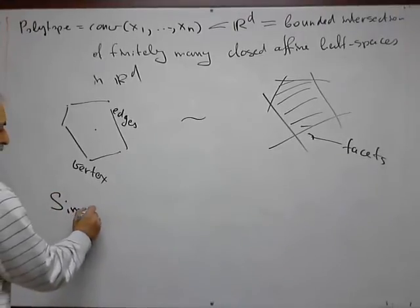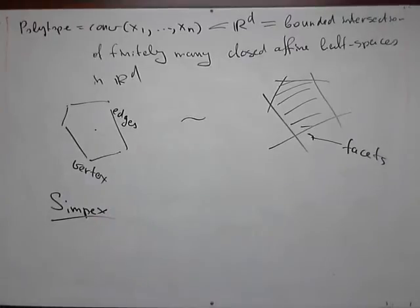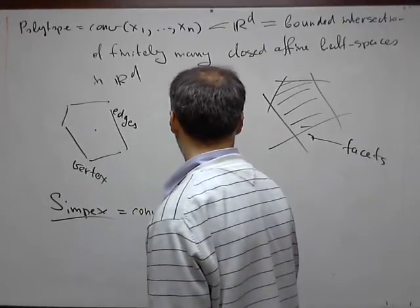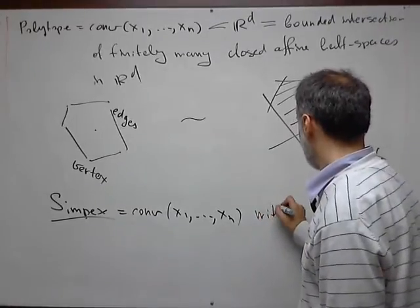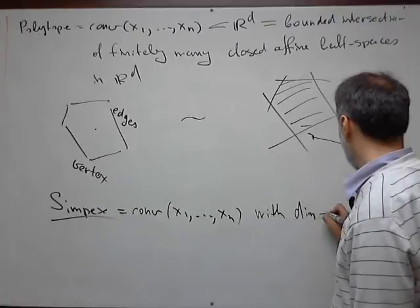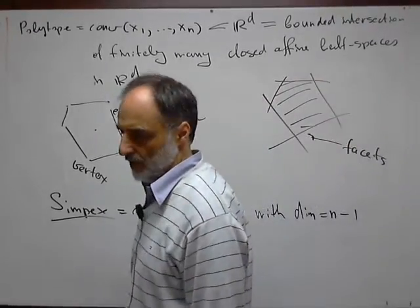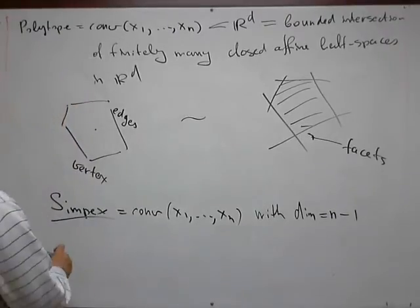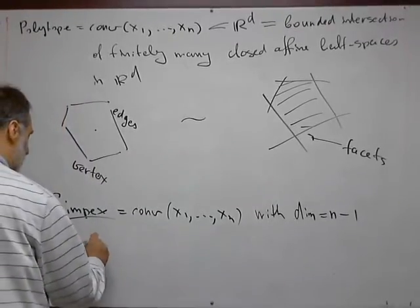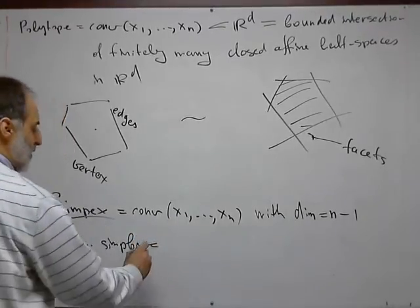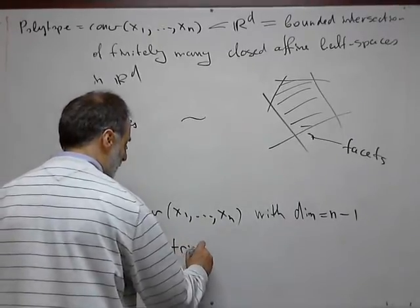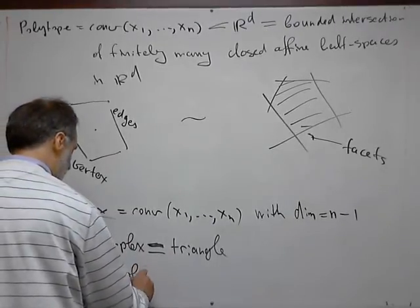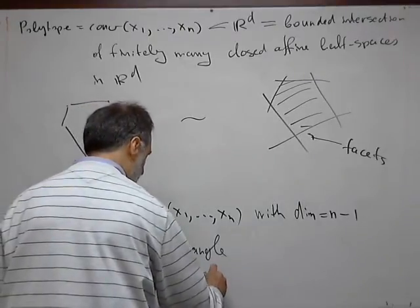The simplest possible polytopes are called simplices. A simplex is by definition the convex hull of n points, with the condition that the dimension of this polytope is the number of points minus one. So points are exactly zero-dimensional simplices, segments are one-dimensional simplices, and two-dimensional simplices are exactly the same as triangles.